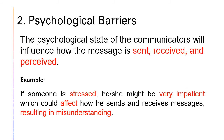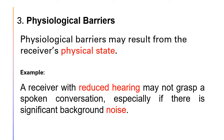Number 2: Psychological barriers. The psychological state of the communicators will influence how the message is sent, received, and perceived. For example, if someone is stressed, he or she might be very impatient, which could affect how he sends and receives messages, resulting in misunderstanding. Anger is another example of a psychological barrier — when we are angry, it is easy to say things that we may later regret and also to misinterpret what others are saying. Number 3: Physiological barriers. Physiological barriers may result from the receiver's physical state. For example, a receiver with reduced hearing may not grasp a spoken conversation, especially if there is significant background noise. Your grandmother or grandfather may not hear as clearly as your mother or father, and thus may misunderstand your messages and respond differently.